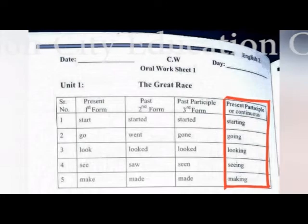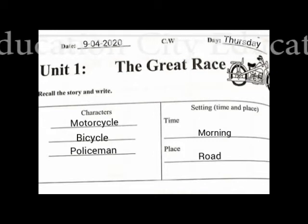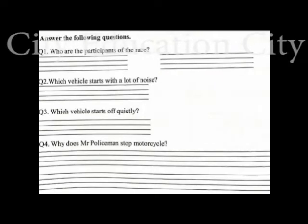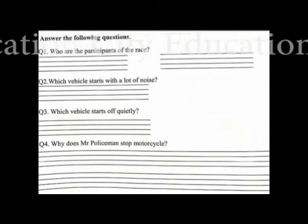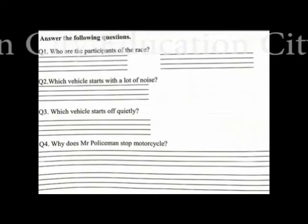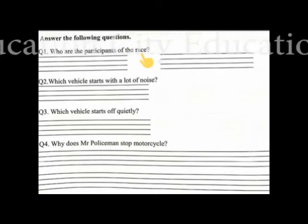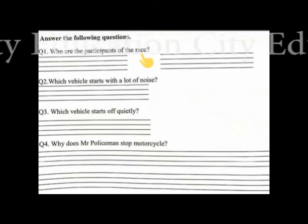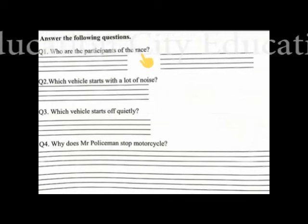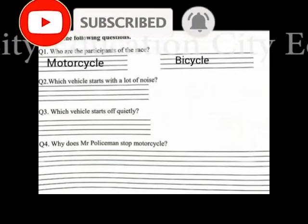Repeat and learn them. Now let's proceed. The story setting is morning on a road, with three characters: bicycle, motorcycle, and policeman. Now tell me — who are the participants of the race? The first one is motorcycle and the second one is bicycle.